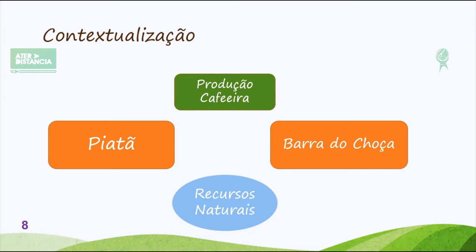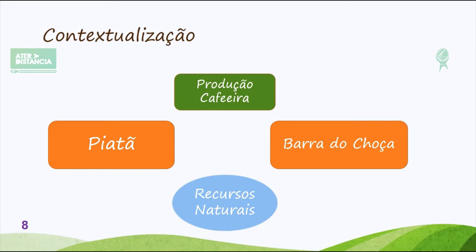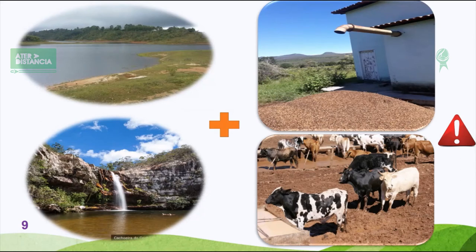Por outro lado, Barra do Choço também tem a característica de ser um grande produtor de água. É um município que fornece água para Vitória da Conquista, a terceira maior cidade do estado, com a barragem de Água Fria 1 e Água Fria 2. É um município que deve se atentar para o tratamento dos resíduos, uma vez que os resíduos da casca de café e do gado, quando em contato com os recursos naturais, vão causar poluição. Devemos ter esse cuidado para que a nossa atividade agrícola não se torne causadora de impacto ambiental.